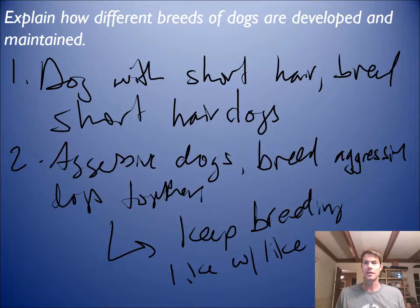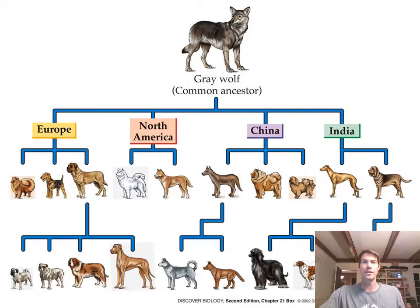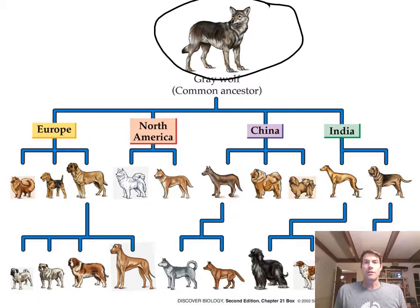And surprisingly, sometimes it's over just two, three, four generations — which for dogs can be about 10 years — and you get all these new varieties, new breeds. We all know all modern dogs came from the gray wolf. You can actually back-breed any of these dogs with the wolf and get wolf hybrids.